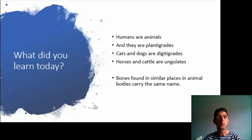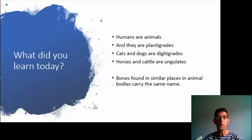Furthermore, we learned that bones found in similar places in animal bodies have the same name. We saw that with the heel bone. But it also goes with a breast bone — you have a breast bone, your dog has a breast bone. But your fish doesn't. More about that, maybe later.